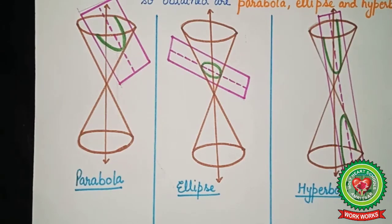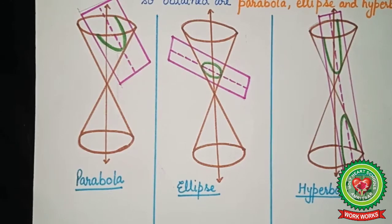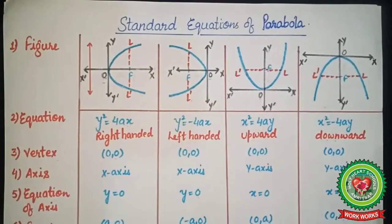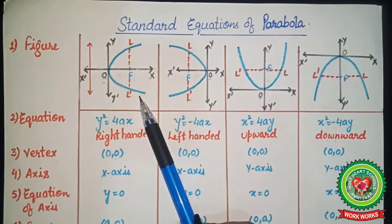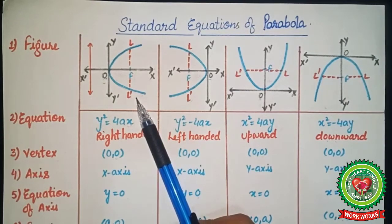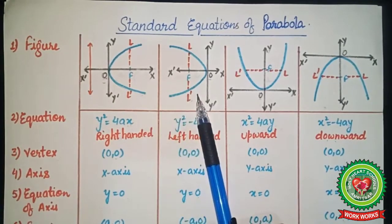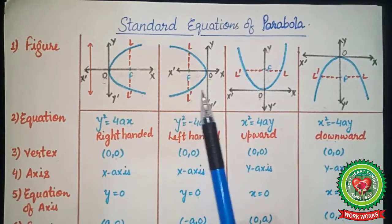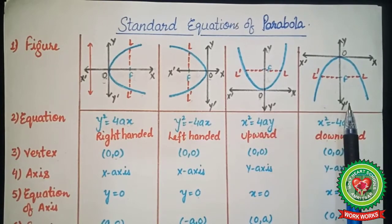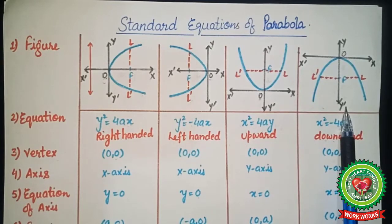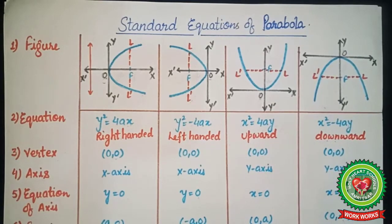Now we are going to start with the very first type: the parabola and its properties. Based on the direction of the curve, we have four types of parabola: first is the right-handed parabola, second is the left-handed parabola, third is the upward parabola, and fourth is the downward parabola. All these curves have different equations.